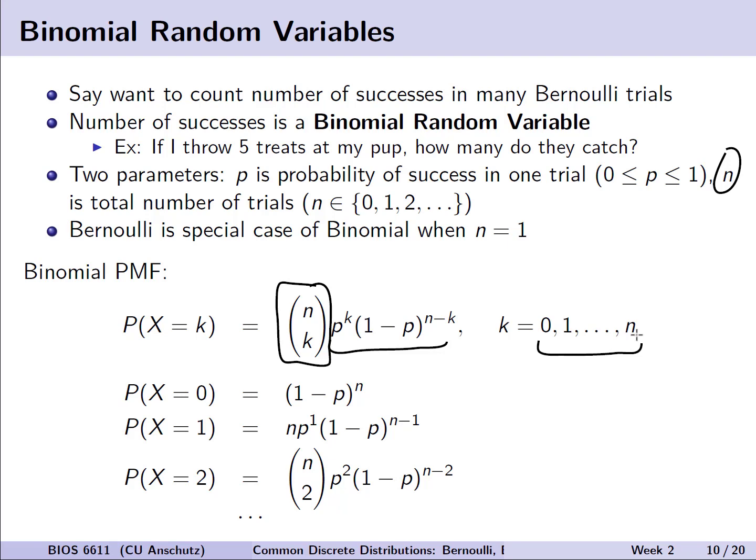Because we have 0 up to n possible values in our sample space, we see that instead of just two realizations, we actually have this more complex representation where if we expect 0 successes, if we were to plug in k equals 0 to that equation above, we see that we have 1 minus p to the nth power, and so on.